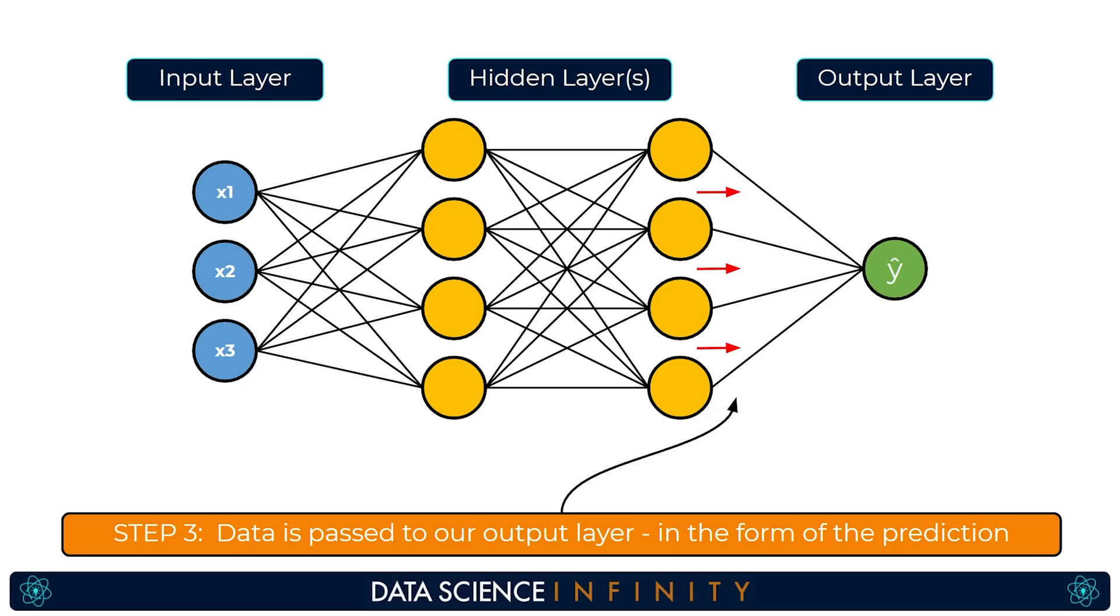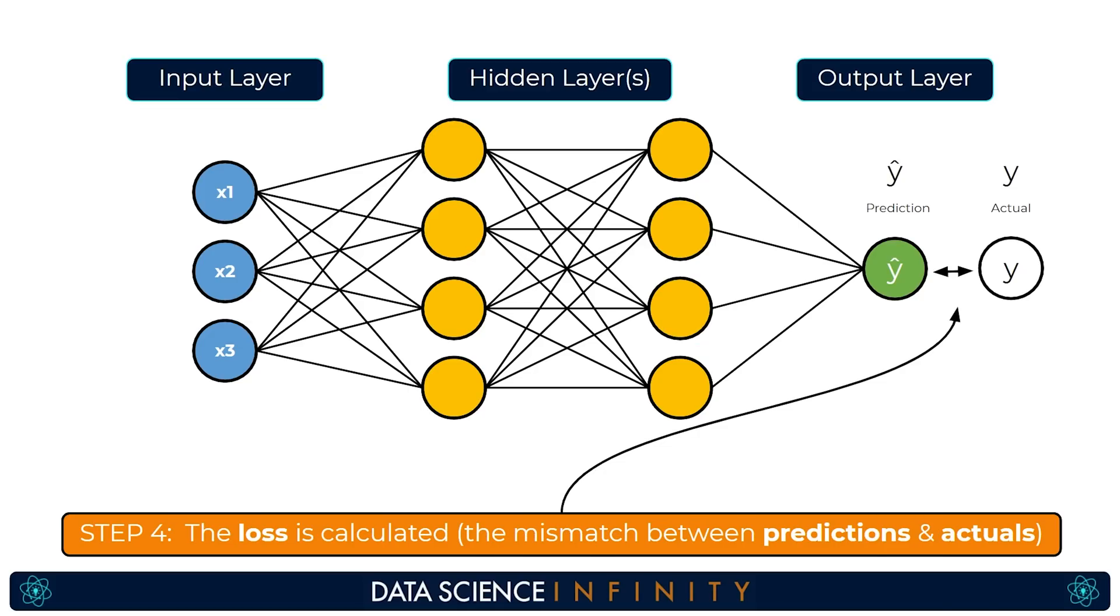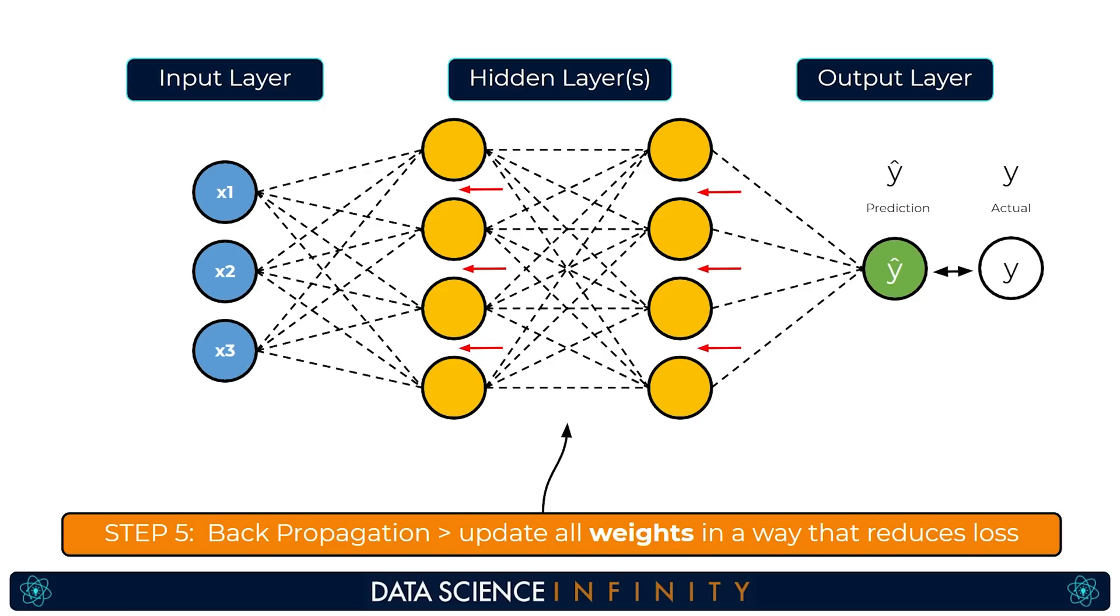The prediction we get is then compared to the actual value for that observation and the loss is calculated based on how much of a mismatch there is. The network then heads back through from right to left in a process called back propagation and using gradient descent small changes are iteratively made to each of the weight values in a way that should reduce our overall prediction error or loss.